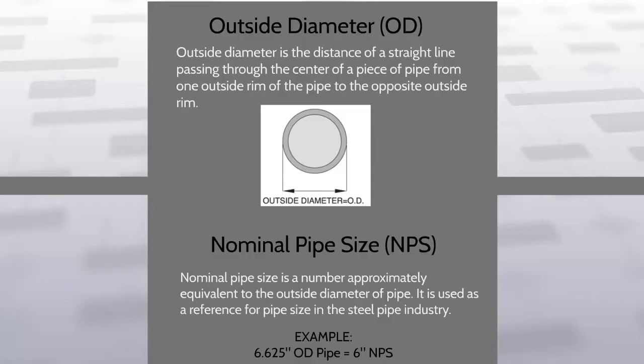Nominal pipe size, or NPS, is a number approximately equivalent to the outside diameter of pipe. It is used as a reference for pipe size in the steel pipe industry.